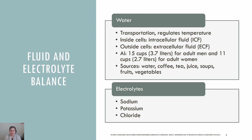Extracellular fluid includes both the fluid component of the blood called plasma and the interstitial fluid that surrounds all cells not in the blood. Water in the body is made up of solutes that are critical to life, and these include electrolytes: sodium, potassium, and chloride. These electrolytes are crucial for water balance, acid-base balance, and assisting in the transmission of electrical impulses along cell membranes in nerves and muscles. To maintain water and electrolyte balance, cells control the movement of electrolytes across their membranes, and water follows the electrolytes by osmosis.